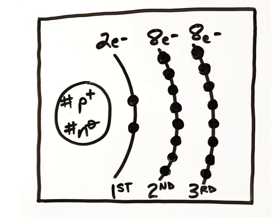Here's another shorthand diagram of a generic atom to illustrate the maximum number of electrons each shell can hold. The first electron shell is the one closest to the nucleus and can hold a maximum of two electrons. The second shell can hold a maximum of eight electrons. If the atom contains more than ten electrons, those are placed into a third electron shell that can also hold a maximum of eight electrons. Electrons are always placed into their respective electron shells in a specific order, beginning with the first shell.